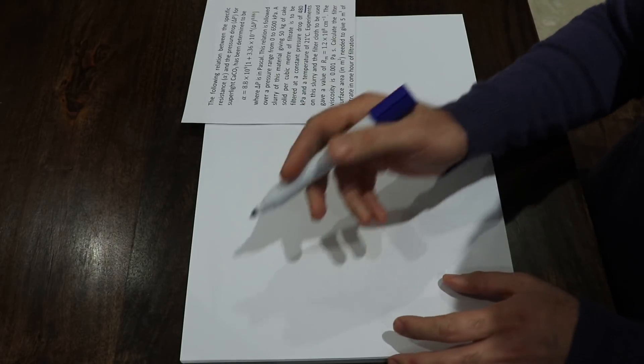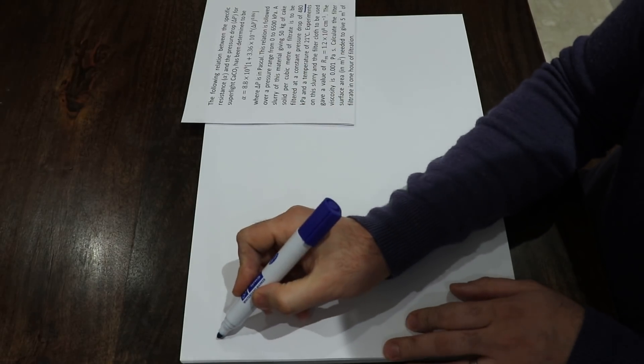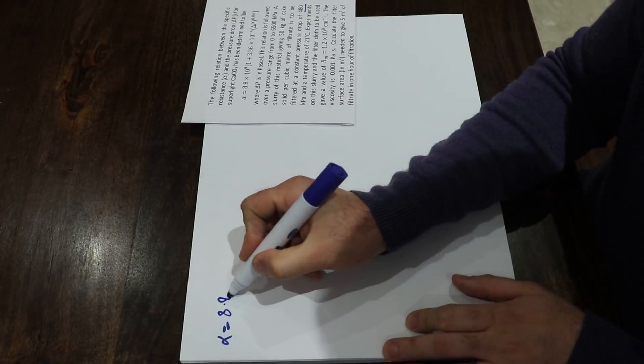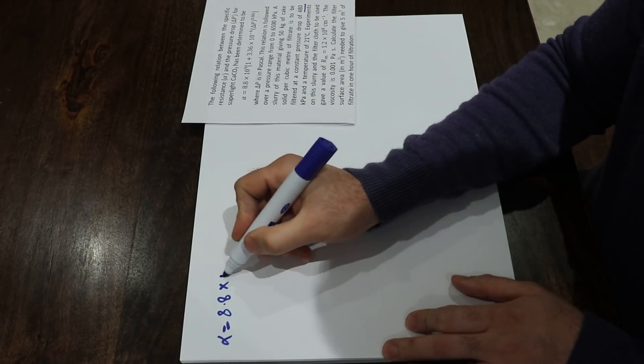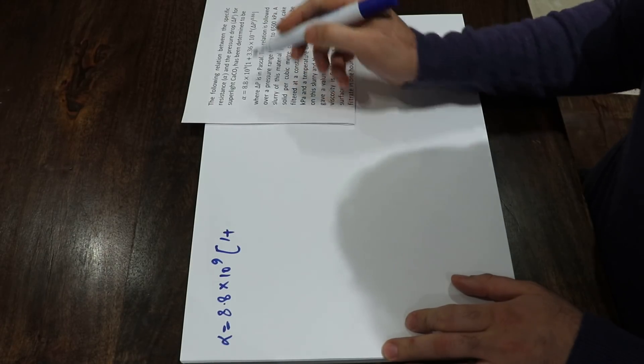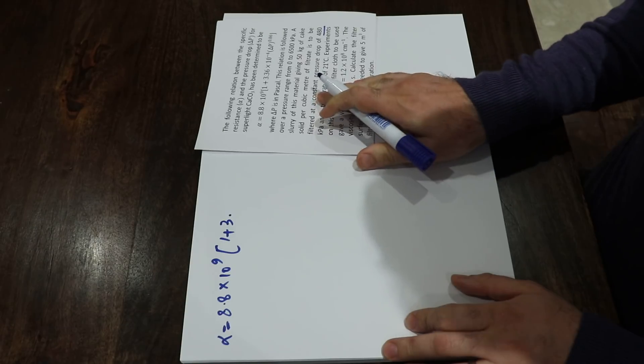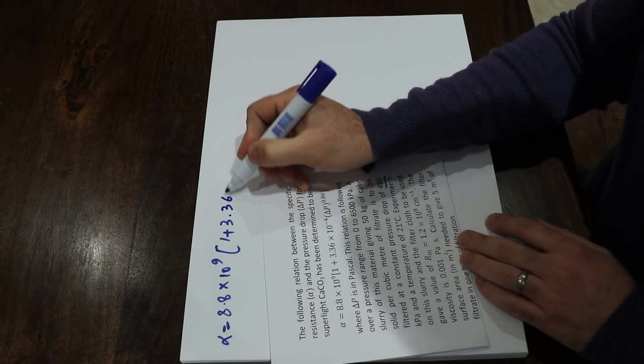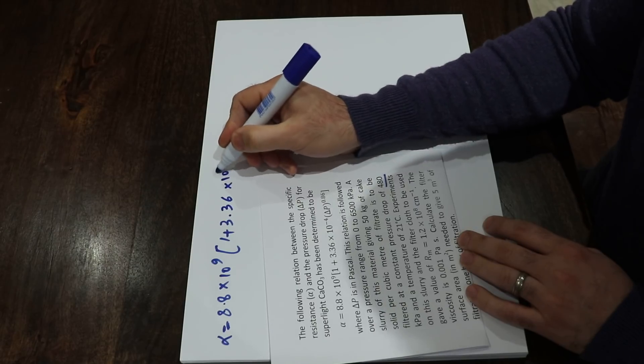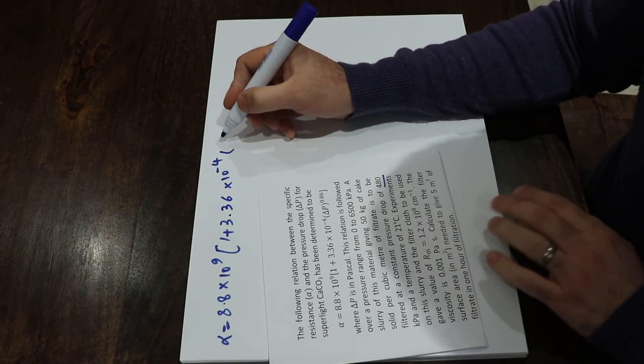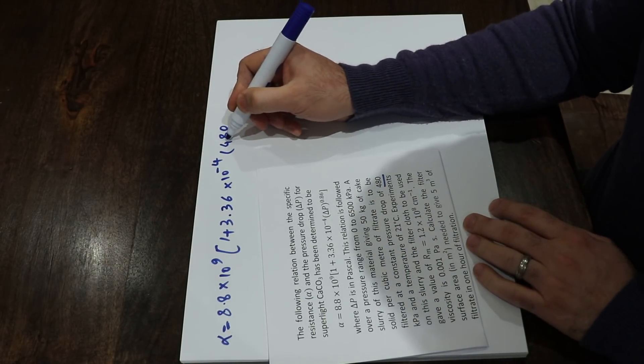Therefore, alpha will be equal to 8.8 times 10 to the power of 9 times 1 plus 3.336 times 10 to the minus 4 times delta P is 480.